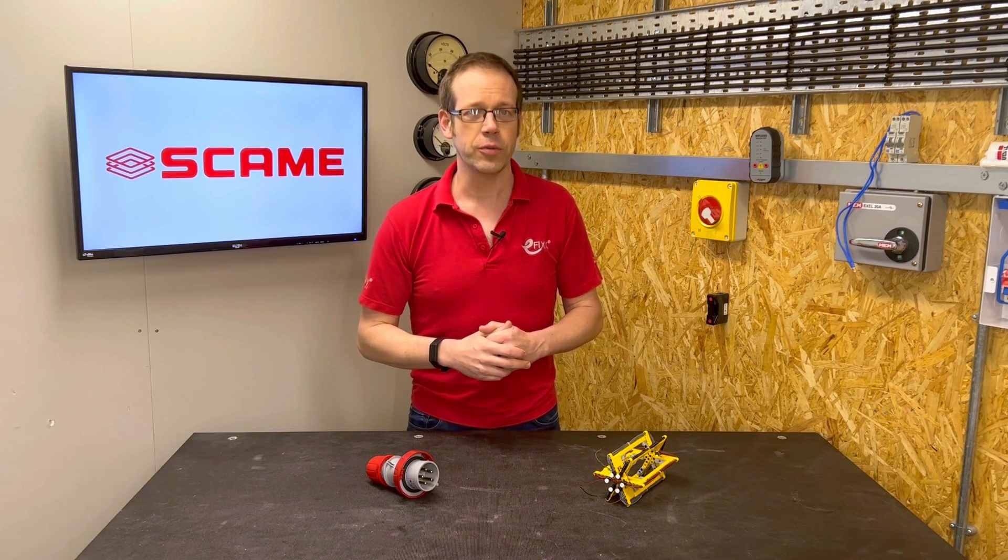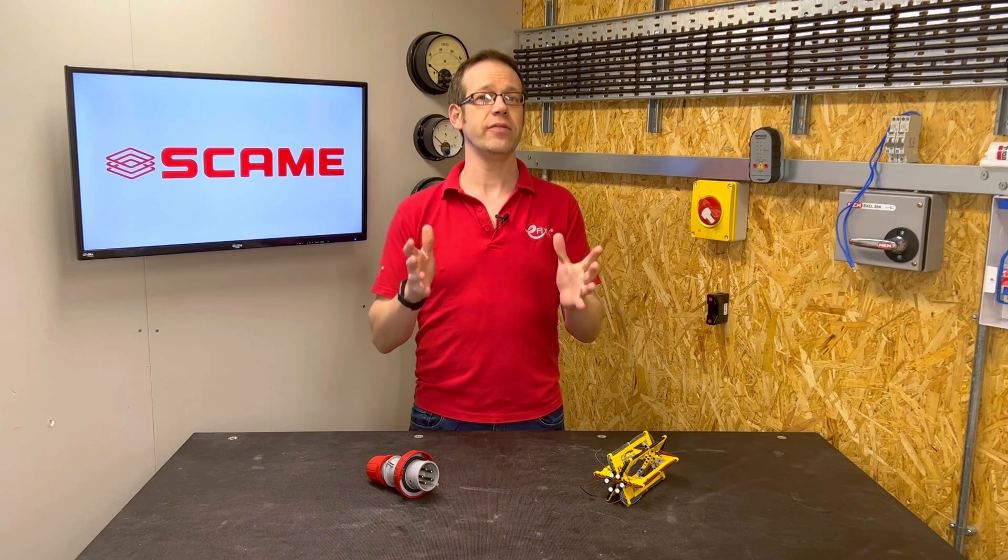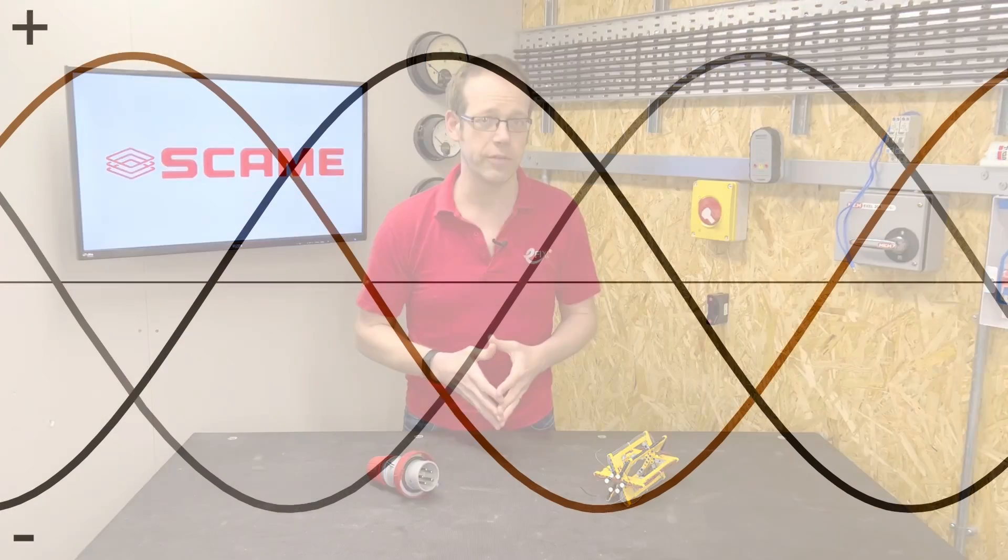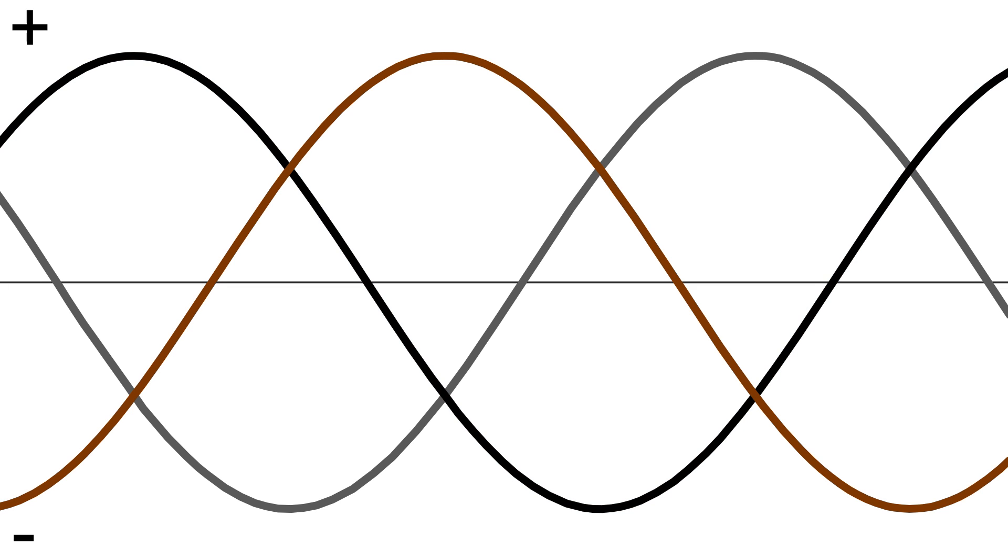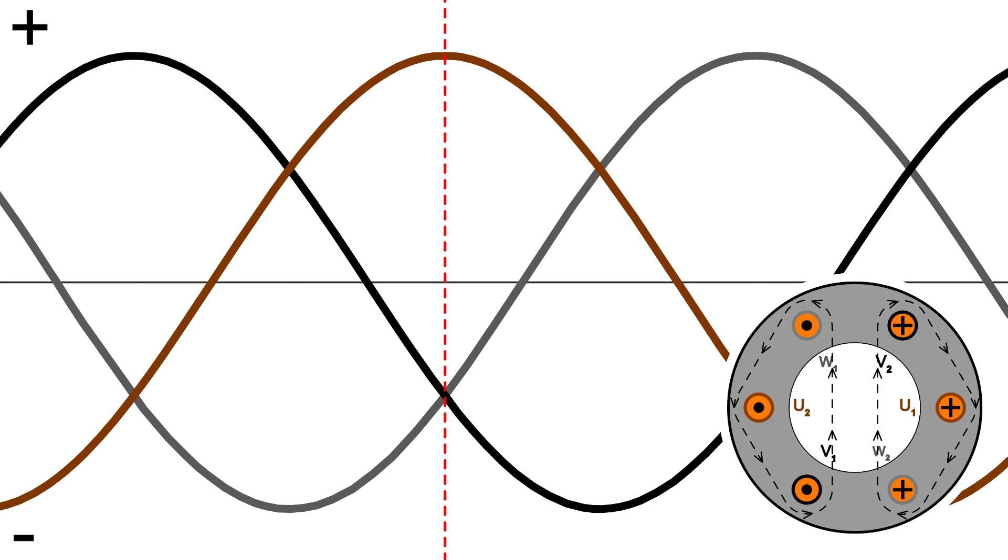So to answer the question as to the change of direction of the motor when two of the phases are reversed the answer becomes clear. If we swap over L1 and L2 and map the direction of current through the windings at various points of the waveform